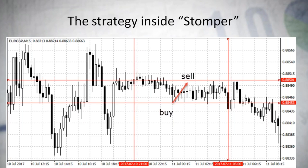It depends on other factors. For example, if you have a long position, we can close it when the price touches the upper bound. So Stomper is a scalper — it trades better when the market is flat, so it's a range trading strategy.